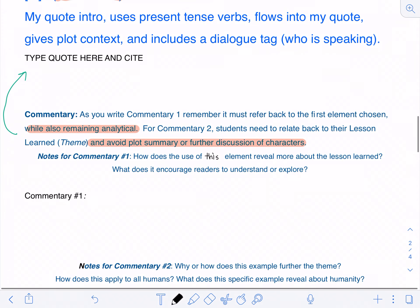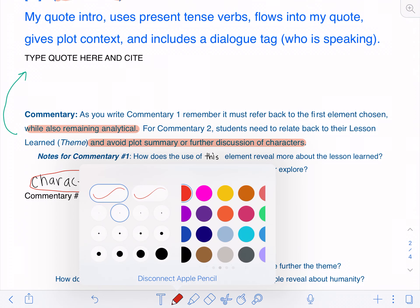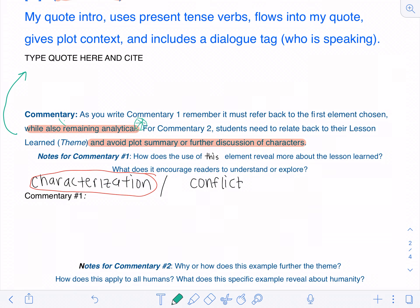When we do our commentary one, it has to analyze whatever element you chose. So you either chose characterization or you chose conflict. Go ahead and write that out and then circle the one that you actually found the quote on in your box. I now have to analyze—and I'm going to draw a star next to this word—I have to analyze how that literary element, characterization or conflict, has helped me make a connection to my theme statement, which is my lesson learned. What does it reveal about the lesson learned? And you're going to go ahead and type that here.